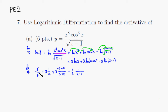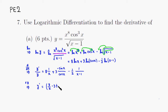The last step is to multiply both sides by y — the original function — so that we have just y prime on the left-hand side. Simplifying the right-hand side: 8 times 1 over x becomes 8 over x. Negative sine over cosine is tangent, so it's negative 3 tangent of x. And then minus 1 over 2 times (x minus 1).